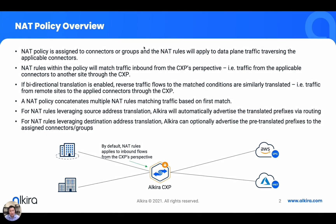When we discuss NAT use cases with Elkira, we really have to think about how the policy is applied relative to the Elkira CXP. The Elkira CXPs, or Cloud Exchange Points, are basically a networking fabric in the cloud that you can connect on-prem sites like SD-WAN or standard IPsec sites, and also connect your cloud networks using native constructs like Transit Gateway or ExpressRoute. Once these on-prem sites and cloud networks like VPCs or VNets are connected to the Elkira CXPs, Elkira's policies can be applied network-wide, and part of that policy is NAT.